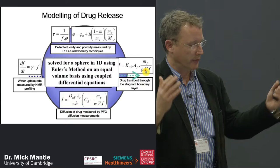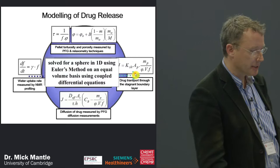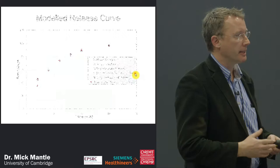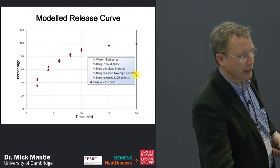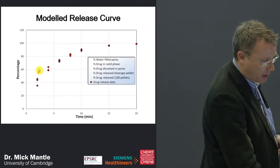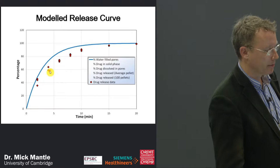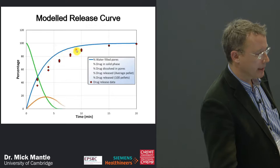James solved a 1D projection for a sphere — making it computationally less intensive — and came up with these results. The red data is actual drug release, from UV or HPLC analysis of aliquots taken from solution, showing percentage drug released from three repeats. The model shows percentage water going into the pores, the drug in solid phase decreasing from 100% as water solubilizes it, and drug dissolved in the pores.